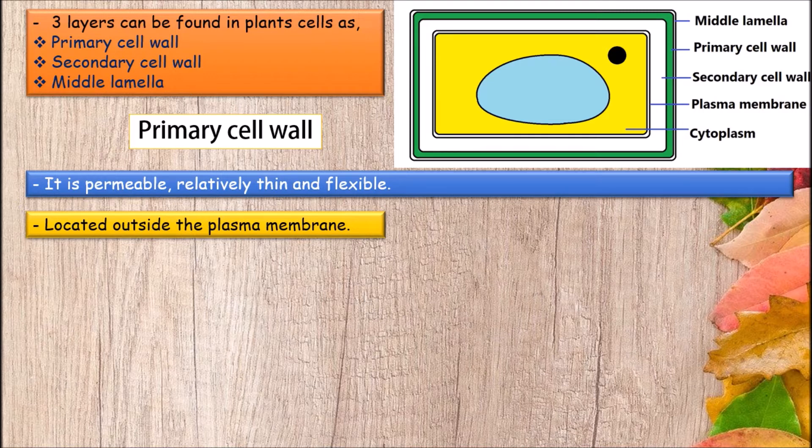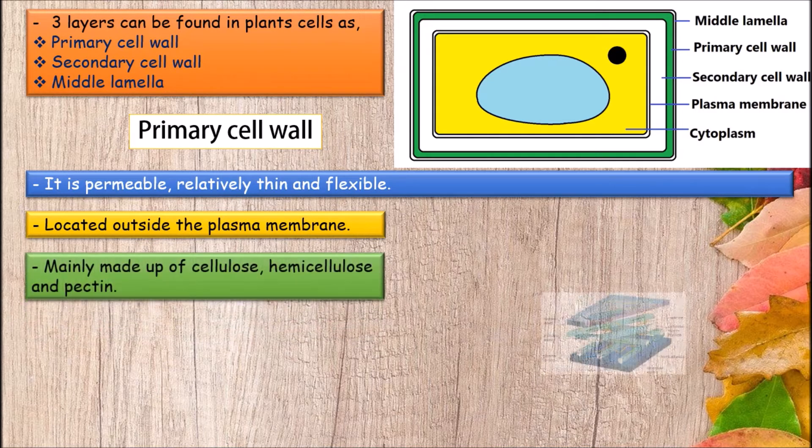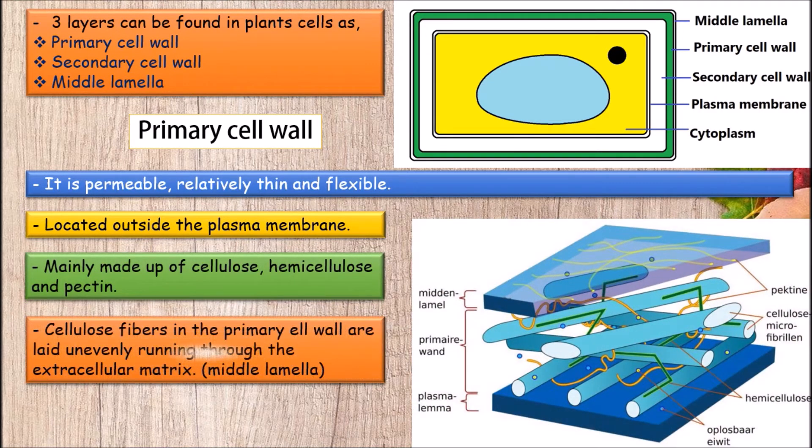Primary cell wall is mainly composed of cellulose, hemicellulose, and pectin. They are all carbohydrates. The cellulose fibers in the primary cell wall are laid unevenly, running through the extracellular matrix, that is middle lamella.